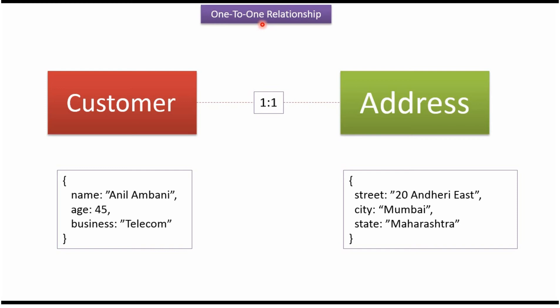In this video tutorial I will explain one-to-one relationship in MongoDB. Here you can see the customer, and customer has name, age and business. And here you can see the address. Address has street, city and state.